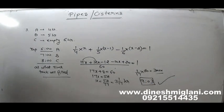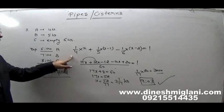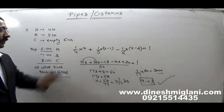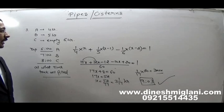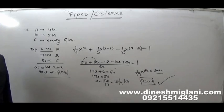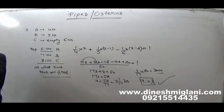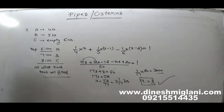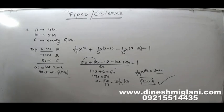To summarize: take the total time as X hours, then A filled X/4, B filled (X−1)/5, and C emptied (X−2)/6. Total work equals 1. Solving gives X = 52/17, or 3 and 1/17 hours, and the answer is 9:03.